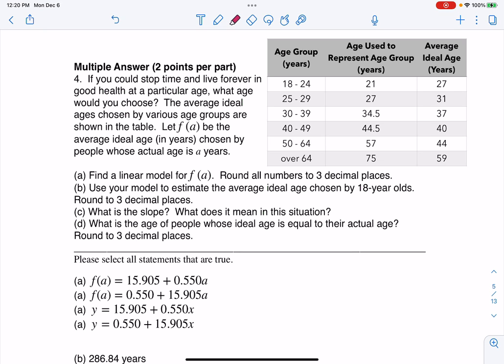Let F of A, so there I'm picking up some lettering, let F of A be the average ideal age in years chosen by people whose actual age is A years.